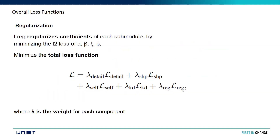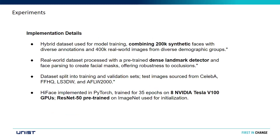The new contribution is the detail loss — they add previous state-of-the-art loss functions on top of their own because without those the model cannot generalize well. For implementation, they use a combination of 200K synthetic images and 400K real images from diverse demographic groups. They also use a landmark detector, key feature extractor, and pre-trained models to extract features and calculate losses. Training data also includes CelebA and high-quality face images.